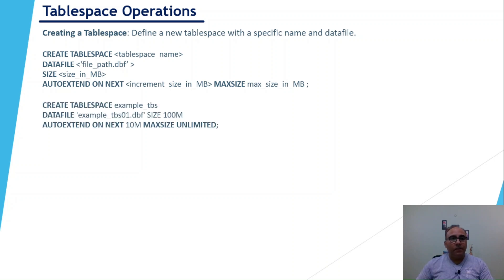Here's an example: CREATE TABLESPACE example_tbs DATAFILE with the specified data file name and size, AUTO EXTEND ON NEXT 10M, MAX SIZE UNLIMITED. Rather than specifying a max size, you can also specify UNLIMITED, though you must make sure it will not fill your disk.